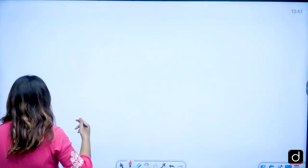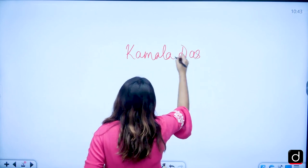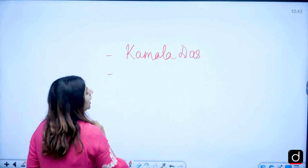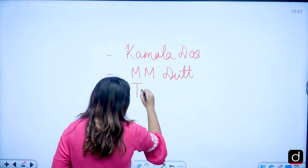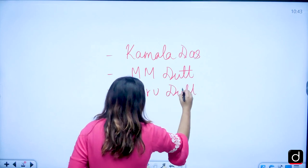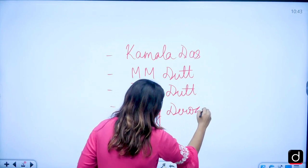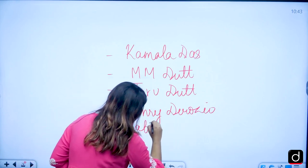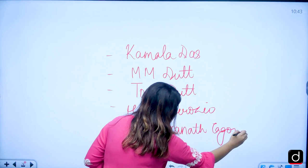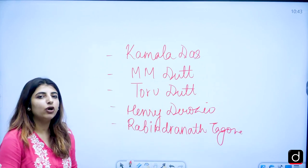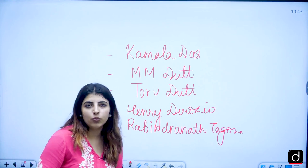We have tried to talk about poets like Kamla Das, who is a confessional poet. We have tried to talk about other poets like Michael Madhusudan Dutt, Toru Dutt, Henry de Rosio, Rabindranath Tagore, etc. So these are certain poets which we already have covered in the previous lectures. There are more of them and you can view those particular videos on your own as well.